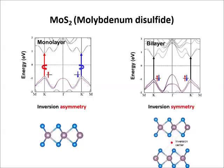What is even more interesting is that in bilayer MoS2, the inversion symmetry is present, and therefore the valley polarization disappears, in principle.